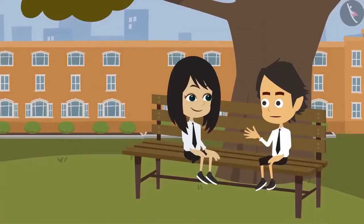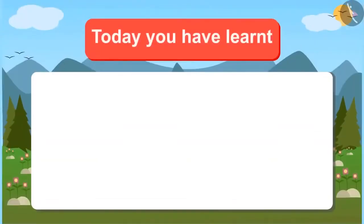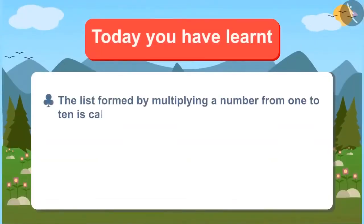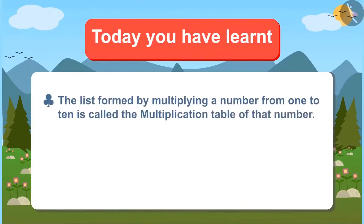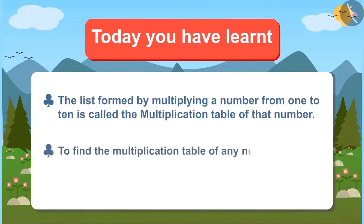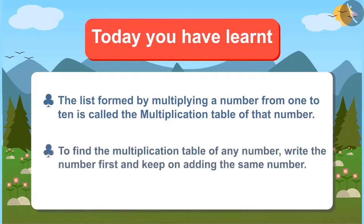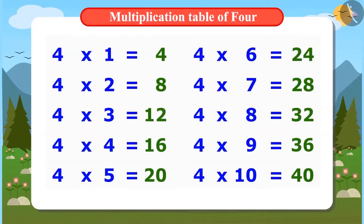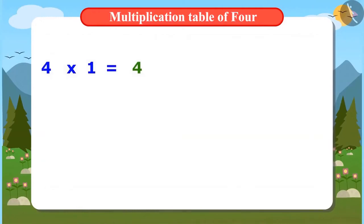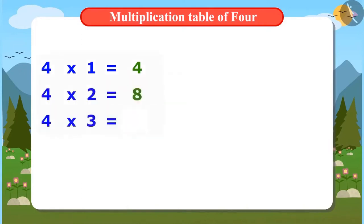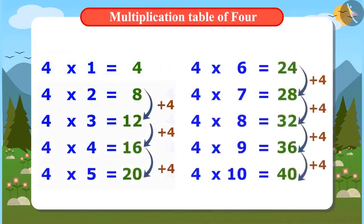This is fun. This way we can easily remember the multiplication table of 4. Today you have learned that the list formed by multiplying a number from 1 to 10 is called the multiplication table of that number. And to find the multiplication table of any number, write the number first and keep on adding the same number. For example, to find the multiplication table of 4, write 4 first and add 4 to it. Keep doing this till you get the whole multiplication table.